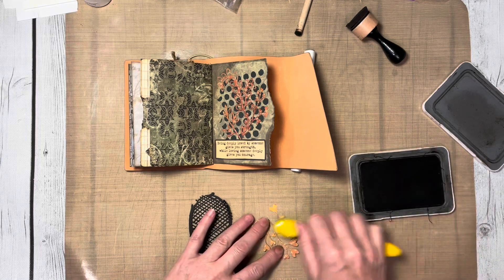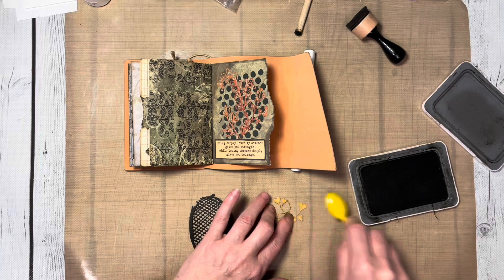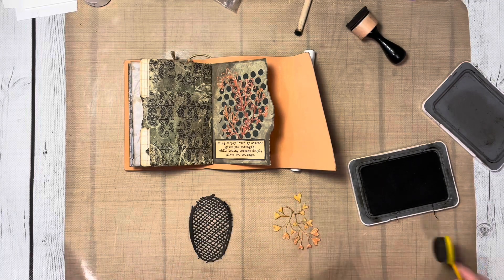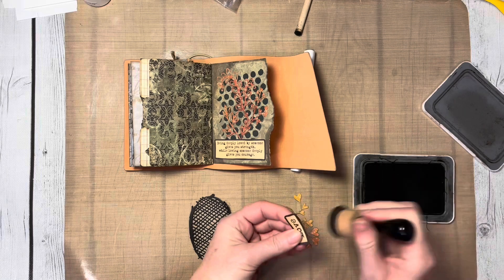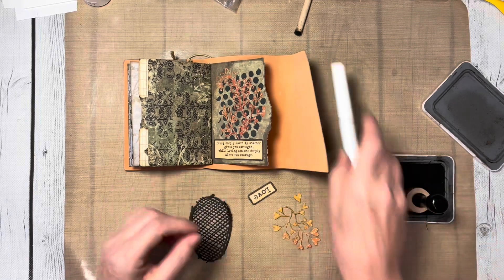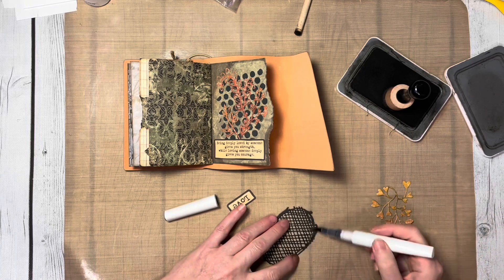I'm inking the edges of all these pieces so they're distressed and you can't see any of the white core from the papers. I had this little love word in my stash—I have a whole pile of words and sayings—and I inked the edge of that as well.